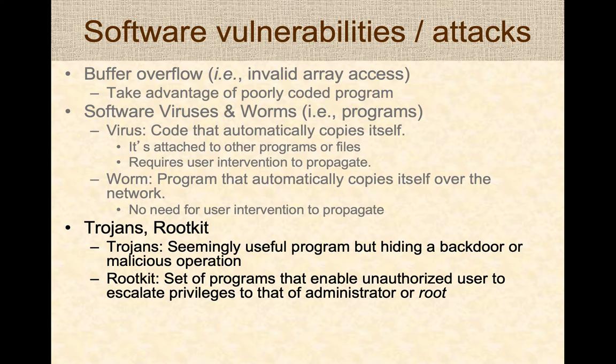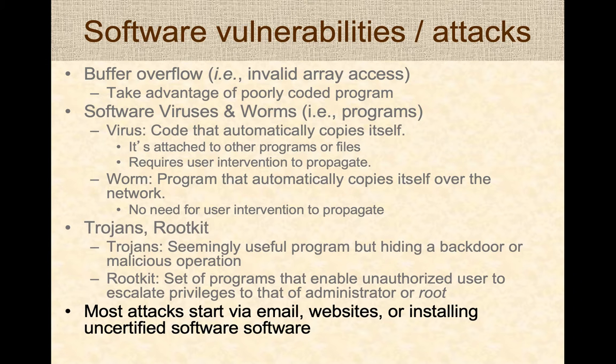Trojans and rootkits are malicious software that typically get into a computer system as part of a phishing attack. Trojans are seemingly useful programs but hide a backdoor to perform malicious operations on behalf of the attacker. Rootkits are a set of programs that enable an unauthorized user to escalate their privileges, becoming like an administrator or root user on a computer, gaining extra privileges they were not authorized to have. Many of these software attacks start via email, downloading uncertified software, or visiting malicious websites.